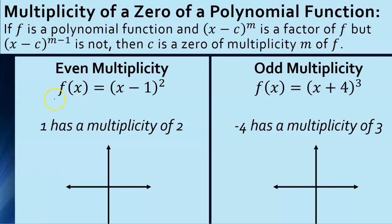So it says if f is a polynomial function and x minus c to some exponent m is a factor, but x minus c to the m minus 1 power is not — don't worry about that, that's just an exception to the rule we'll never see. In other words, if we see x minus c to some exponent, then c is a zero. We talked about that previously, but what's new is the multiplicity m of the function.